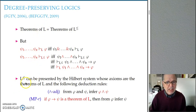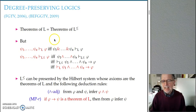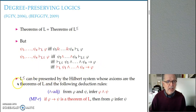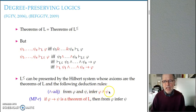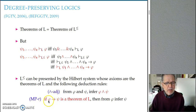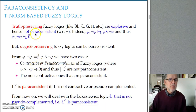Regarding axiomatization: the truth-preserving T-norm-based logic is axiomatized by a finite set of axioms with modus ponens as the only rule of inference. The degree-preserving Fuzzy logic is axiomatized with the same axioms as the truth-preserving logic, but with two deduction rules: adjunction — from phi and psi you obtain their weak conjunction — and a restricted version of modus ponens, where from phi you obtain psi only if the implication from phi to psi is a theorem.